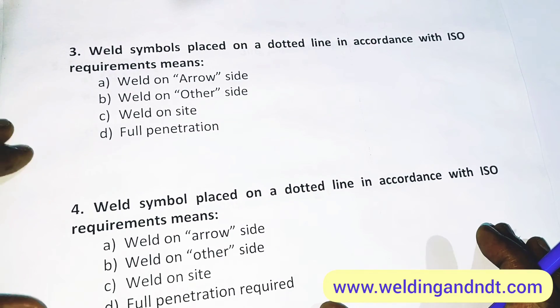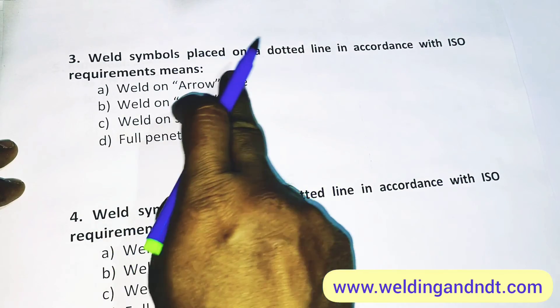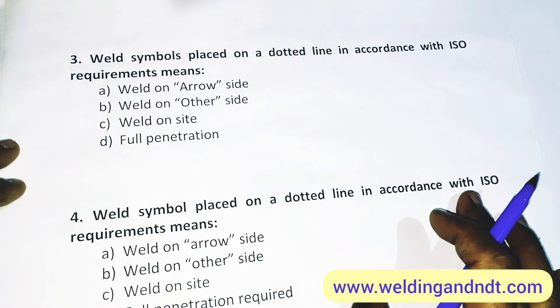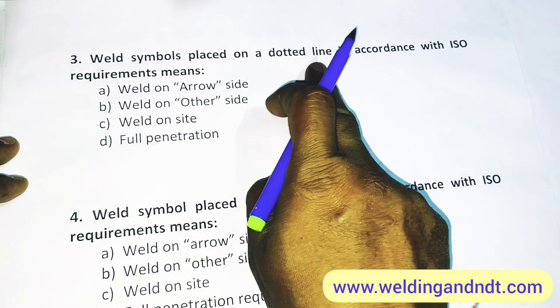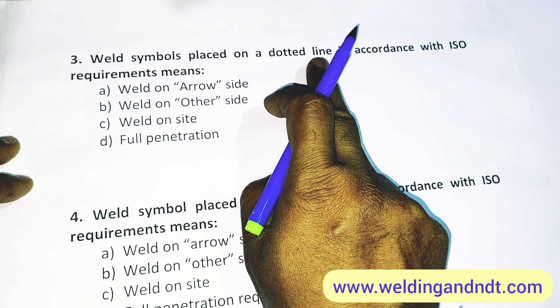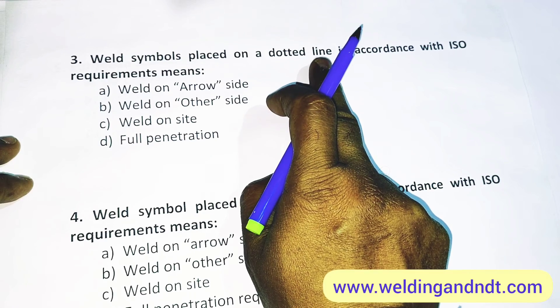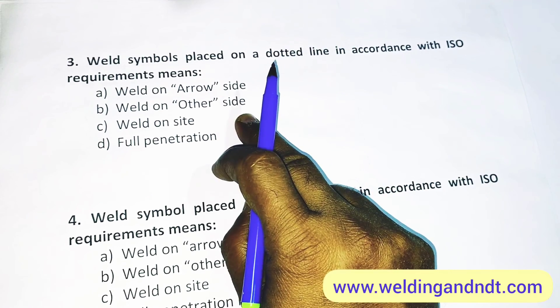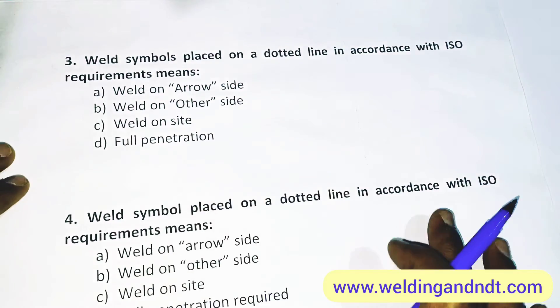Now question number 3: weld symbols placed on the dotted line in accordance with ISO requirements means... So ISO is the European standard. A weld symbol placed on the dotted line means the weld on the other side. So B will be the answer, weld on the other side.